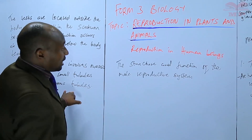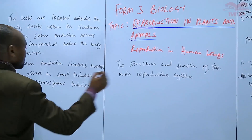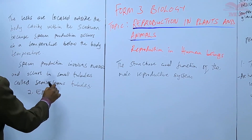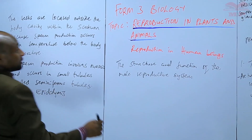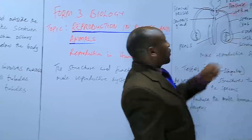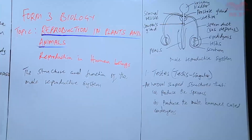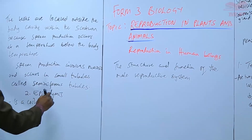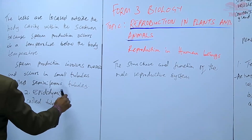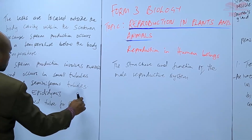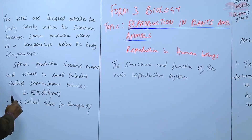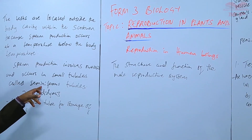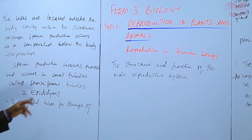After the testes, we have the epididymis. This is a coiled tube where the sperms are stored. Once they are produced in the seminiferous tubules, they are stored within the epididymis.